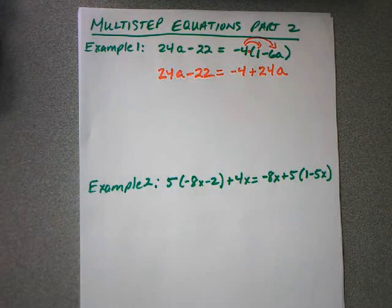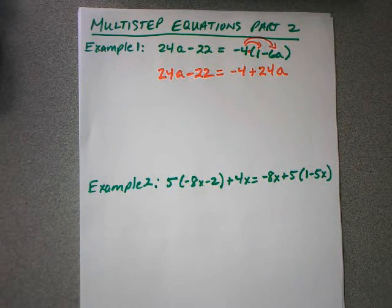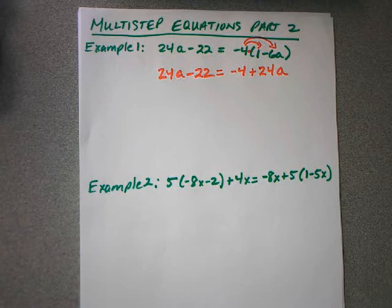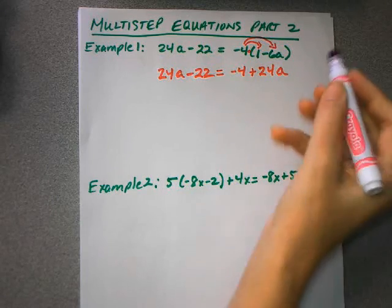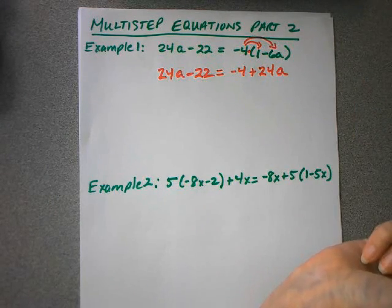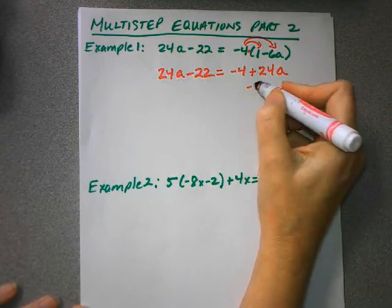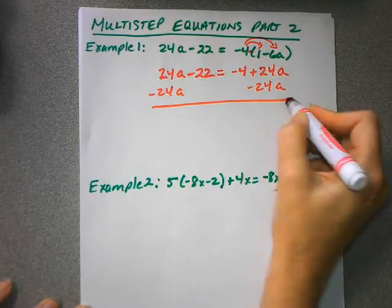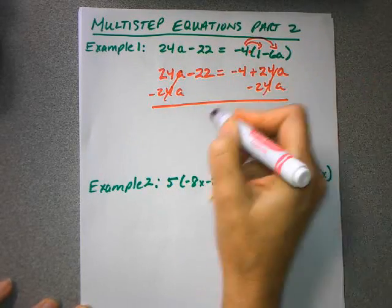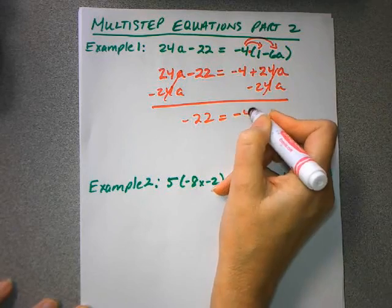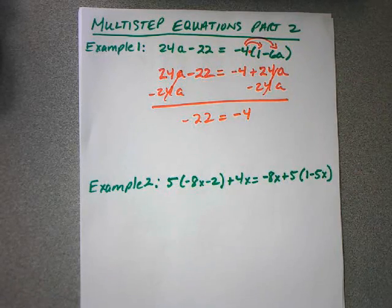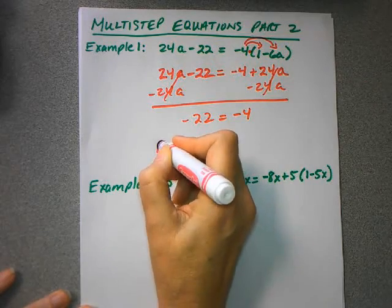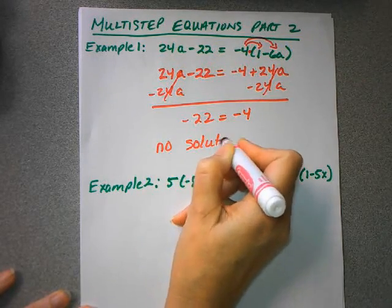So now we need to get our variables to one side of the equation and our constants to the other. If you notice, our variable expressions are exactly the same. When I subtract 24a from both sides, I am going to end up with negative 22 equals negative 4. Now is that possible? It's impossible. So that means that this equation has no solution.